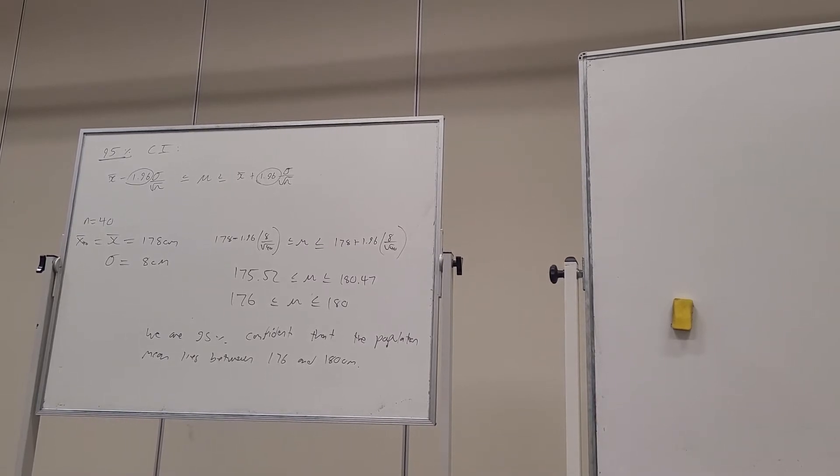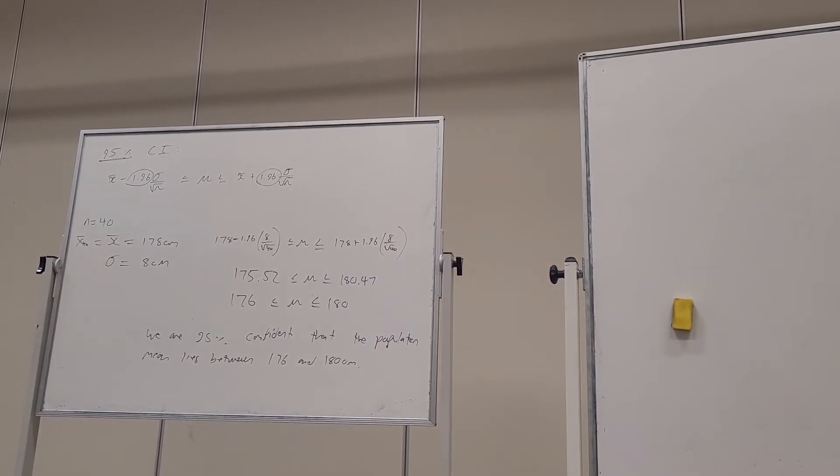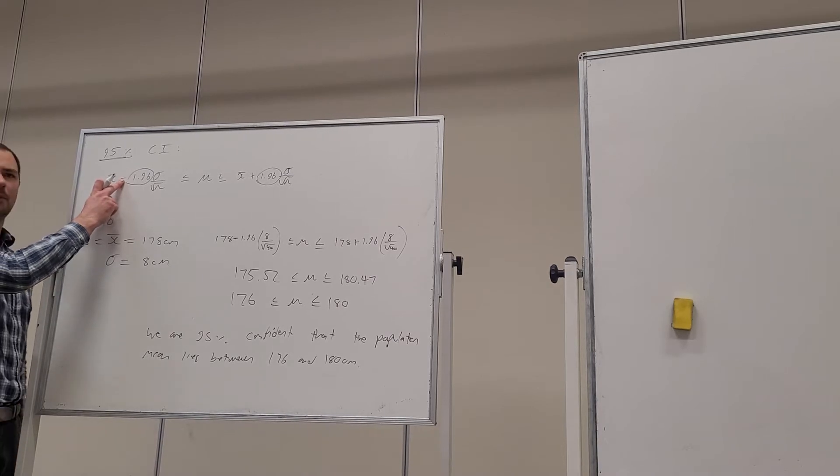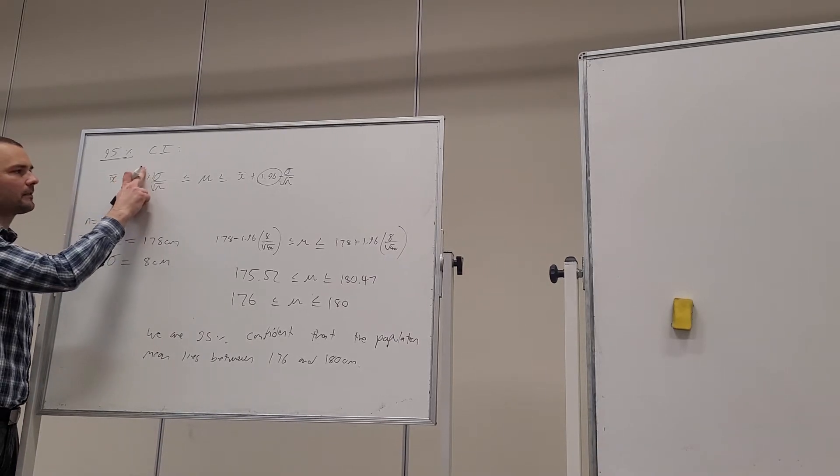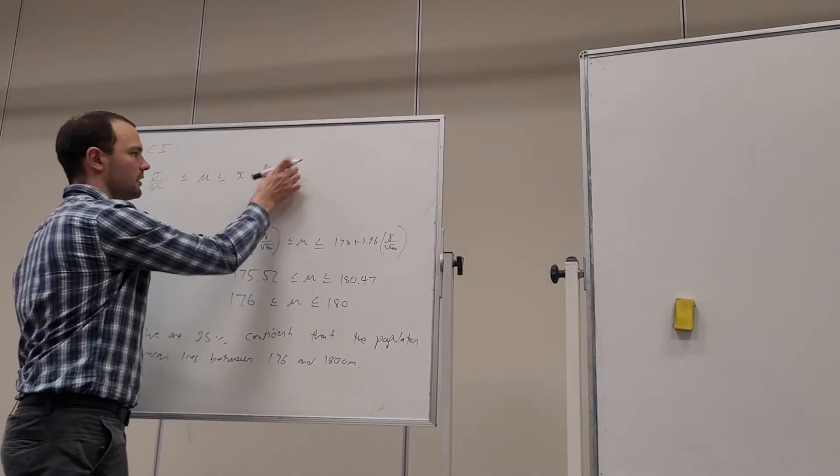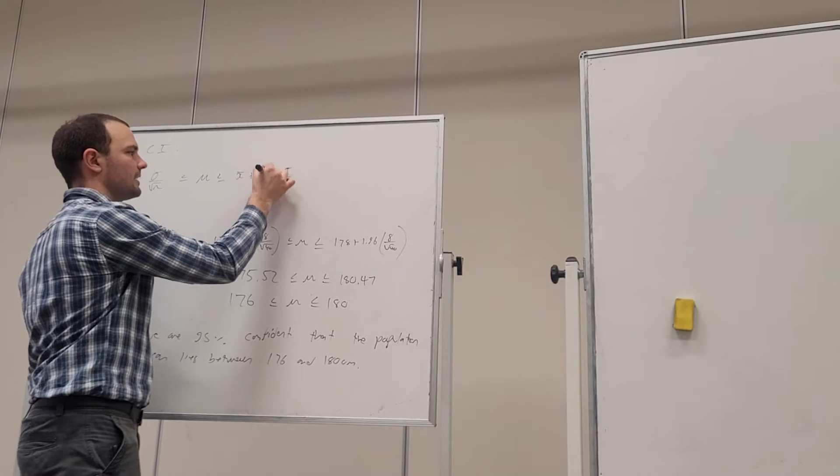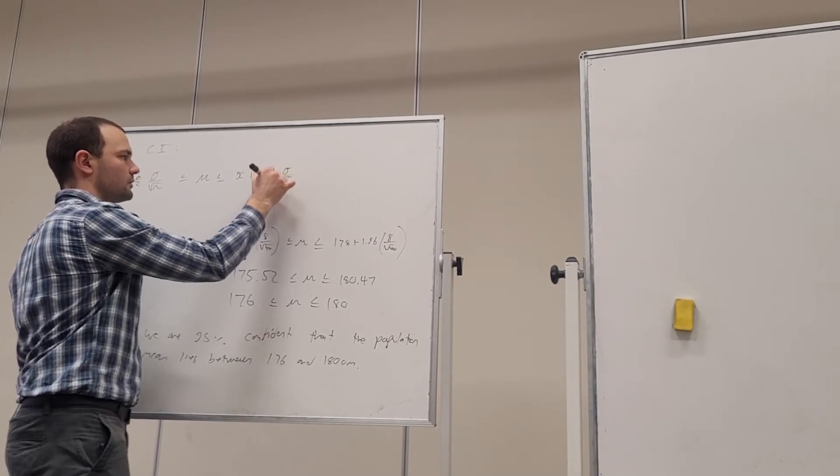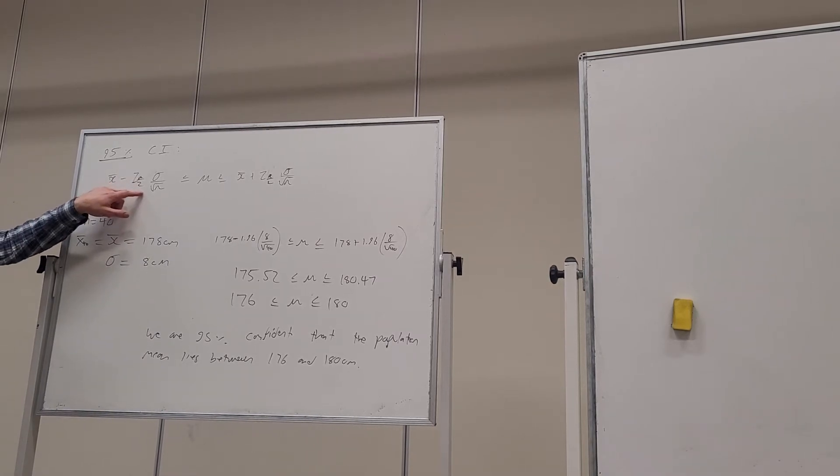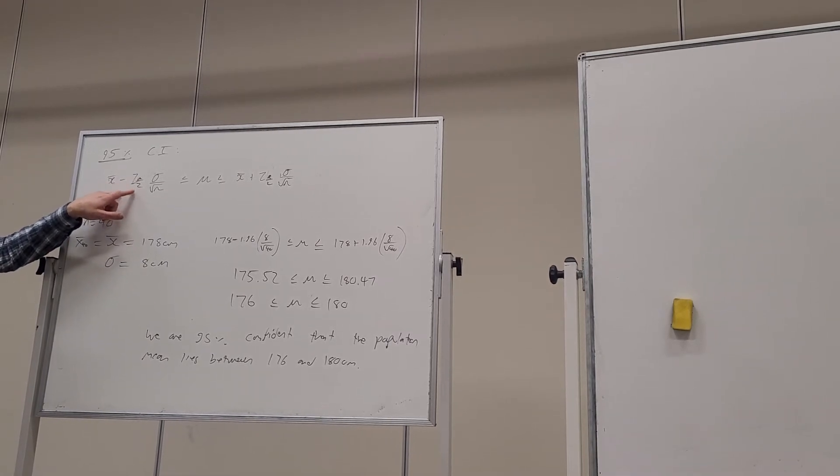So the difference in the formula for other levels of confidence is rather than 1.96, they have written there this value called Z alpha on 2. So that's going to be some number and that's going to affect our level of confidence. Z alpha on 2. So I'm going to show you how we can determine this value of Z alpha on 2. We're going to work that out first.